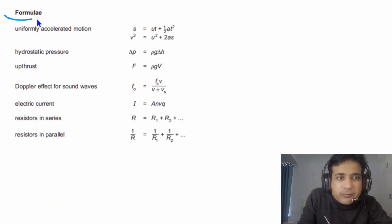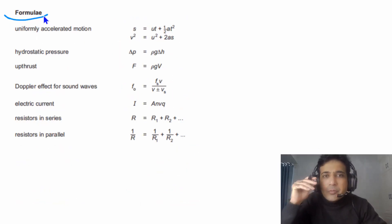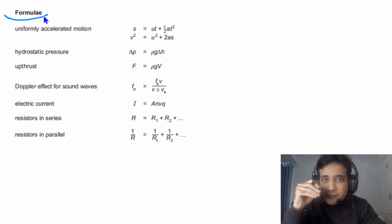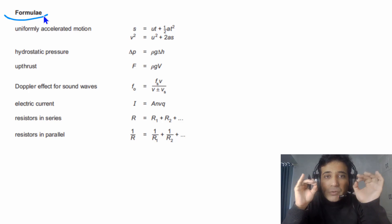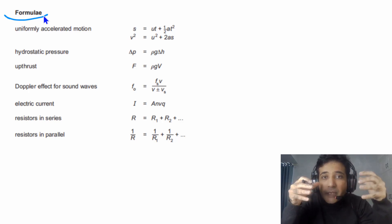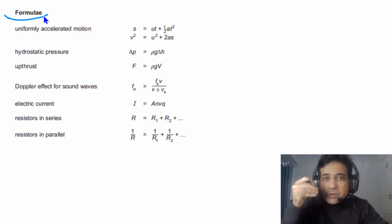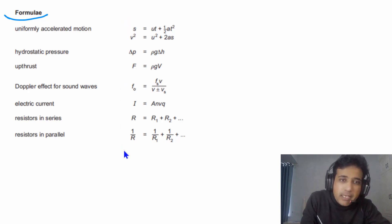On the second page of the exam paper, some important formulae are also given to you. But these are not all the formulae you need for AS Physics, so it's very important that you remember the rest or understand how to derive them. When you derive a formula, you understand the physics behind it. Try to derive formulae yourself, but if you've forgotten any, you can check this page.